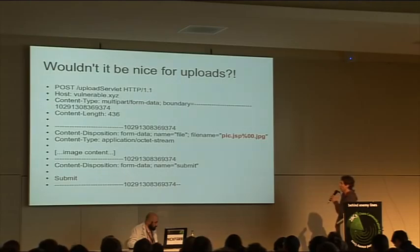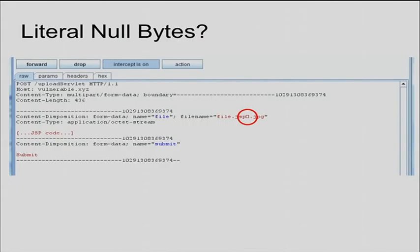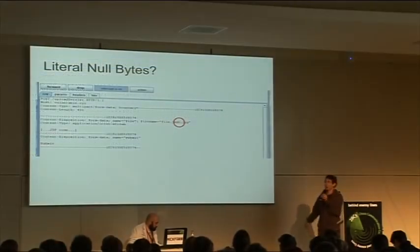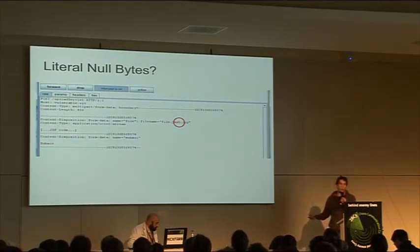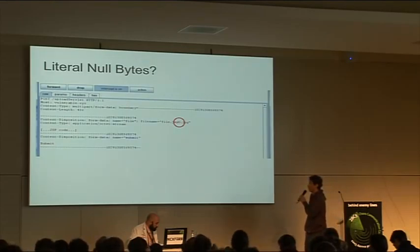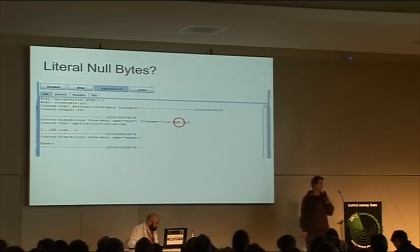Another approach is to use a literal nullbyte. Historically, this never used to work because web servers were written in C. When the web server receives this request, it will see the content-disposition header only up to the dot JSP. The web application framework would automatically correct the unclosed quote and pass the string file.jsp on to the web application, which would see the JSP extension and deny storing the file.